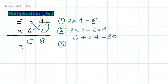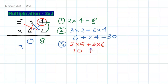Step 3: hide the 4 and multiply 2 times 5 and 3 times 6. That's 10 plus 18 = 28, plus carry 3 gives 31. Write down 1 and carry 3 forward.